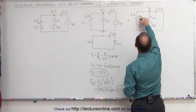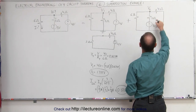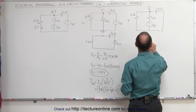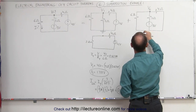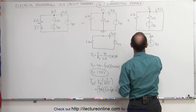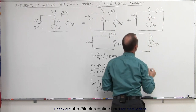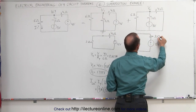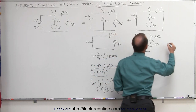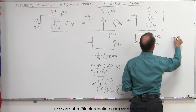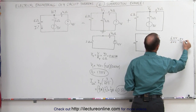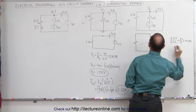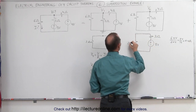Now for the 8 volt source: we have a parallel branch between the 6 and 4 ohm resistors, so we redraw the circuit with the 8 volt source, the 3 ohm resistor, and the equivalent resistance of the 6 and 4 ohm parallel combination. Using product over sum: 6 times 4 divided by 6 plus 4 equals 24 divided by 10, which is 2.4 ohms. So this equivalent resistance is 2.4 ohms.